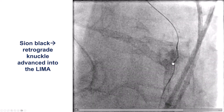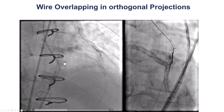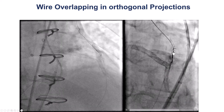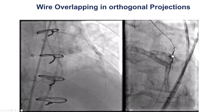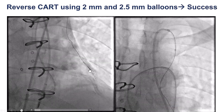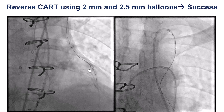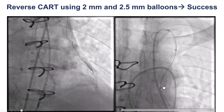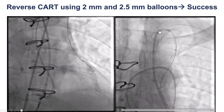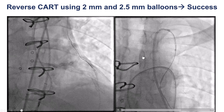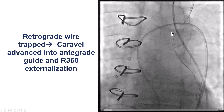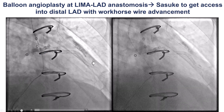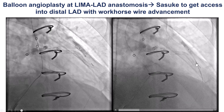There was likely some tortuosity and calcification, but things now looked promising, and we confirmed position in orthogonal projections. We had an externalized guidewire position of the retrograde guidewire into the LIMA. Since the LIMA is a thick vessel, we decided to do the reverse CART. We advanced a 2.0 mm balloon and were able to advance the retrograde guidewire into the antegrade guide extension and guide catheter, externalized with an R350, and then performed balloon angioplasty of the anastomosis, which dilated very nicely.